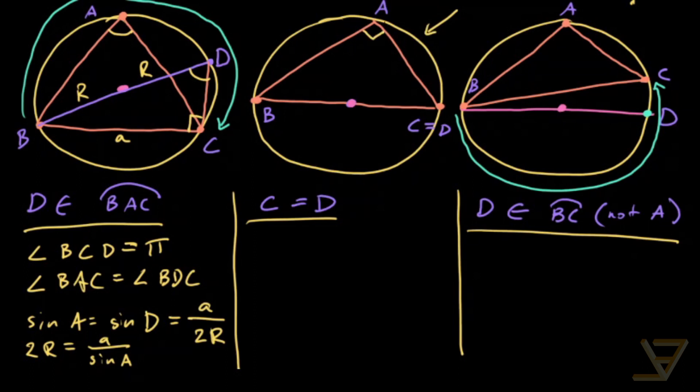Let's handle the second case now. By Thales theorem, this is a 90 degree angle. So what we get in this case is that sine of angle A is equal to sine of pi over 2, and that is equal to 1.